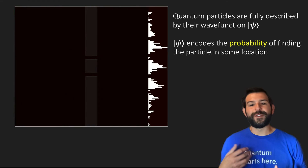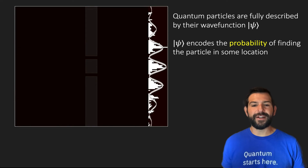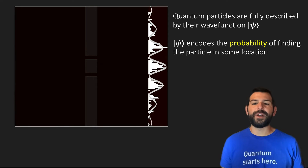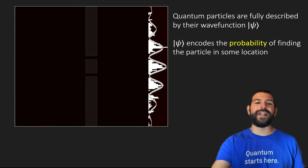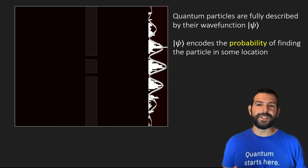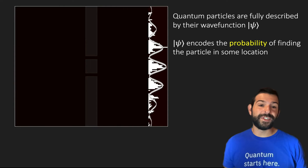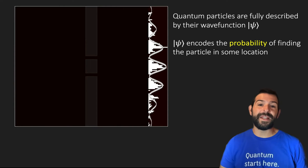After running this experiment several times, we see the same type of interference pattern on the screen as what we get from a coherent source of light. Another interesting result that emerges from this experiment is the pattern observed at the screen if we try to measure through which slit the particle went through.